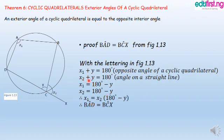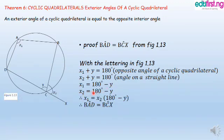With the lettering in figure 1.13, X1 plus Y equals 180, which is because opposite angles of a cyclic quadrilateral sum to 180. Likewise, X2 plus Y equals 180, which is because angles on a straight line sum to 180. Therefore, from the first equation X1 equals 180 minus Y, and from the second equation X2 equals 180 minus Y.